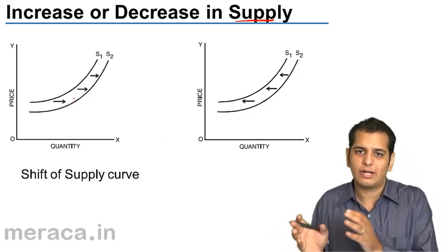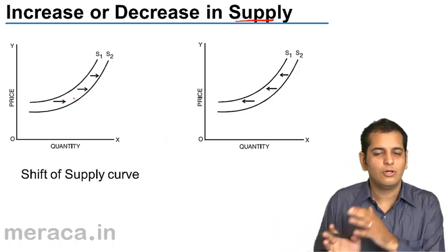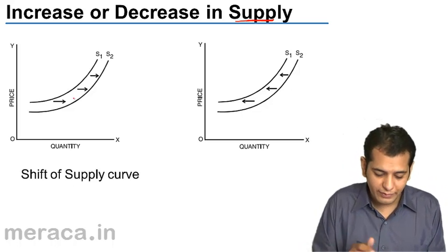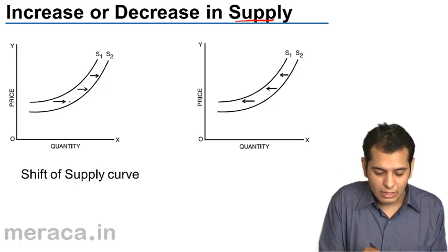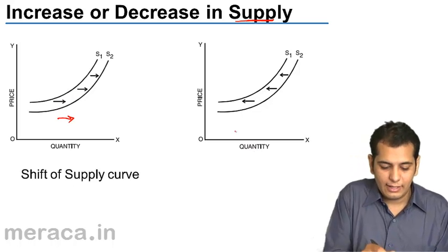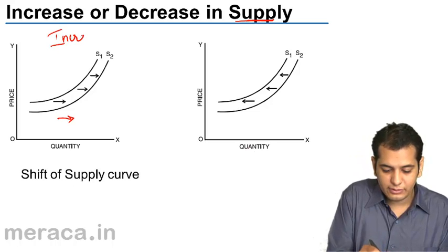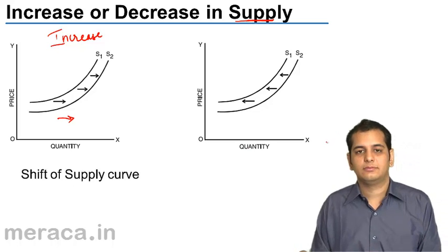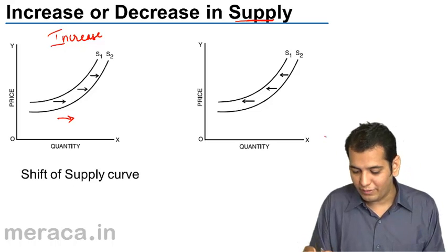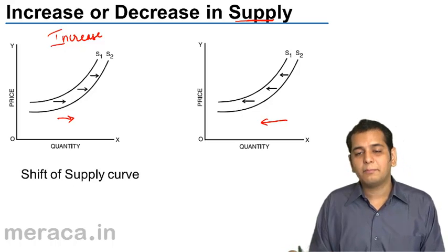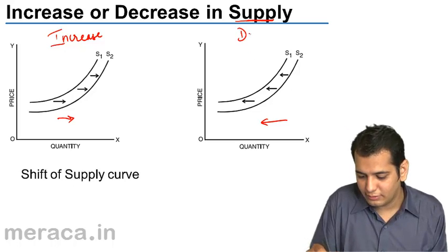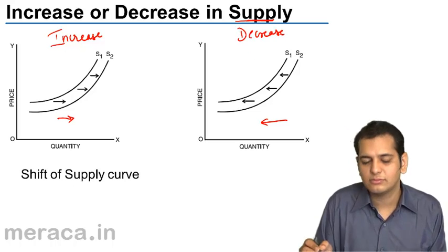The supply curve might shift rightwards — that is outwards — or it might shift inwards or leftwards. When the supply curve shifts outward, we call it an increase in supply, because the supply is increasing. And when the supply curve shifts inwards or leftwards, we call it a decrease in supply.